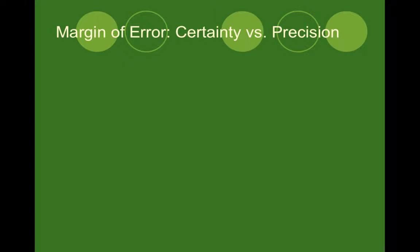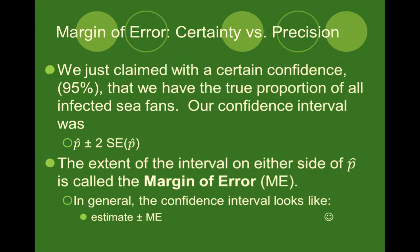We're continuing with chapter 19, which is about confidence intervals for proportions. Yesterday in the video, we created a confidence interval for the actual percentage of CFANS that were infected with some kind of disease. We found out that our interval was from 42.1% to 61.7%, and we calculated that by adding and subtracting two times our standard error. So we claimed that we had 95% confidence that the true proportion of all infected CFANS was in between our confidence interval.